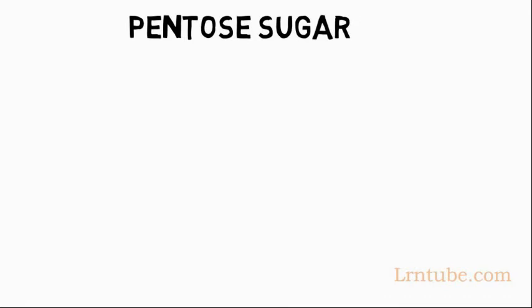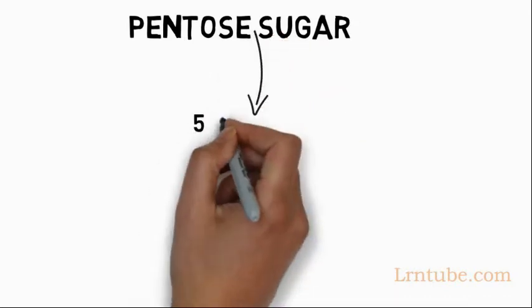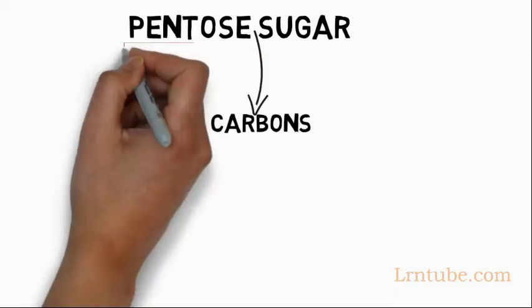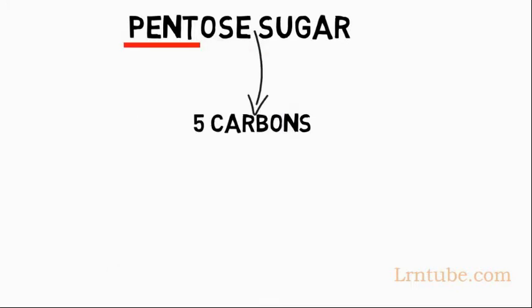Pentose sugar. The sugars found in nucleic acids are pentose sugars. The pentose sugar has five carbon atoms, and from the name you will know that it has five because pent. If you hear hexose sugar, you know it will be six, and if you hear heptose sugar, you know it will be seven.